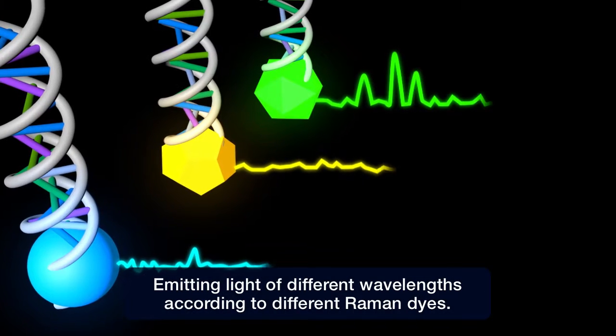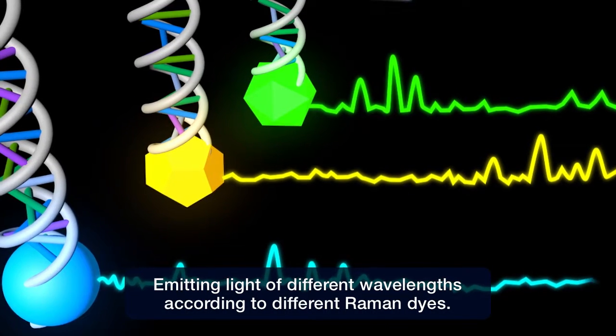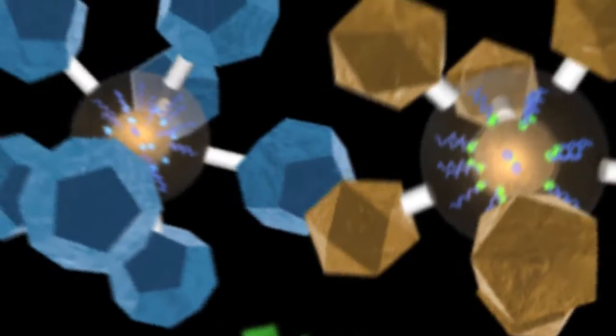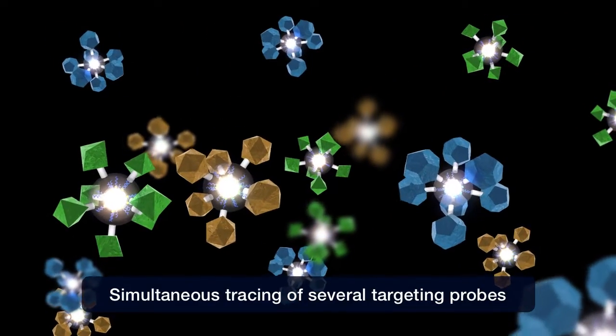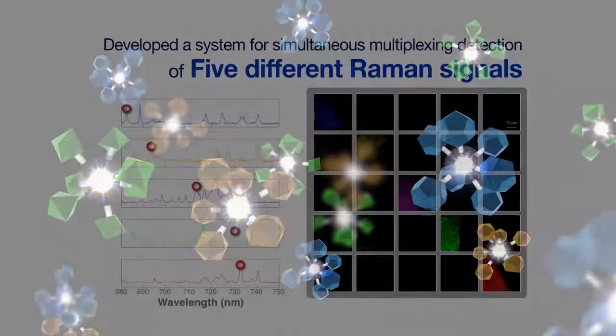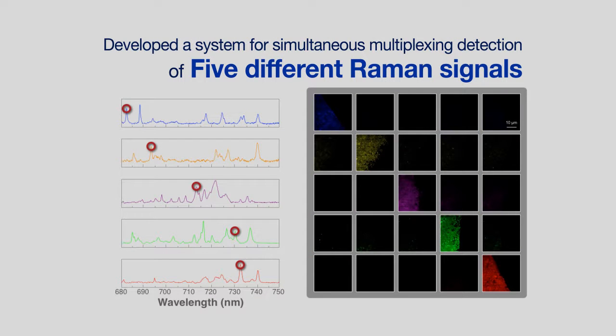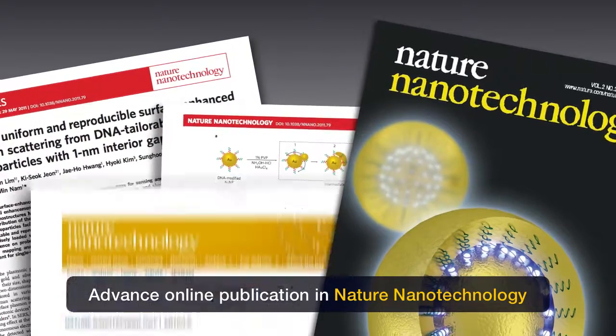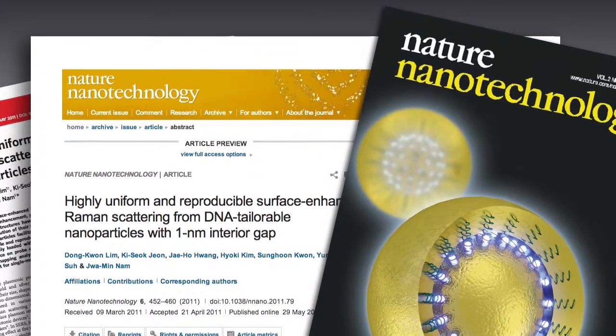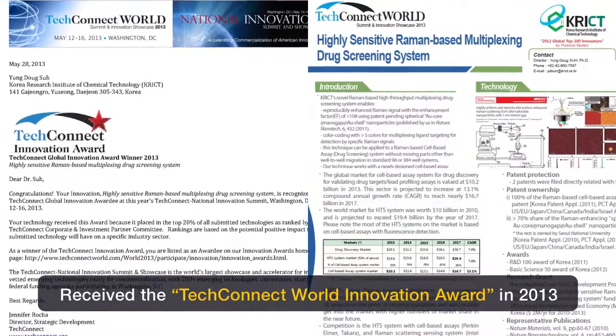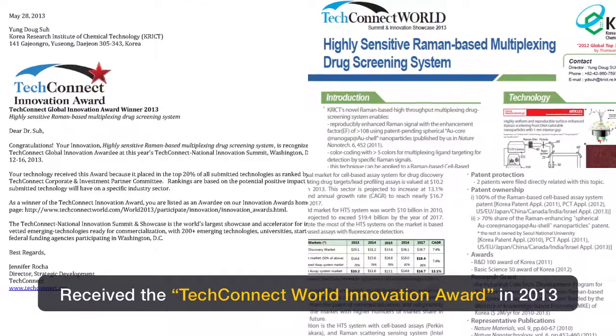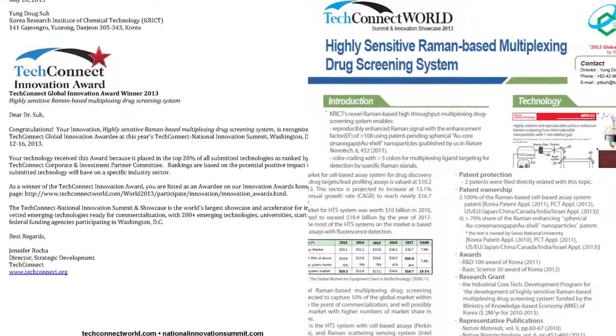These gold sphere NERPs exhibit different Raman spectra according to the different Raman dyes implanted in them. Therefore, we can put in several Raman probes at the same time and investigate them all together. This research team has established more than five-color multiplexing detection and imaging strategy. This research has been published in Nature Nanotechnology and cited more than 150 times. A patent related to this research received the TechConnect World Innovation Award at the TechConnect World Summit and Innovation Showcase held in Washington DC in May 2013.